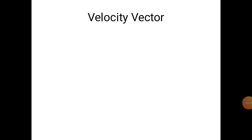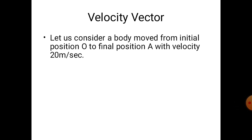The velocity vector: let us consider a body moved from its initial position O to the final position A with a velocity of 20 m per second. The body moves from point O to point A in a linear direction as shown. In order to represent the velocity of the body by a vector, first of all we need to assume a suitable scale. Let us assume a scale of 1 cm equals to 5 m per second. The length of a vector always indicates the magnitude of the quantity. Hence, in order to show a velocity of 20 m per second, we need to draw a line of 4 cm parallel to the direction of motion of the body.